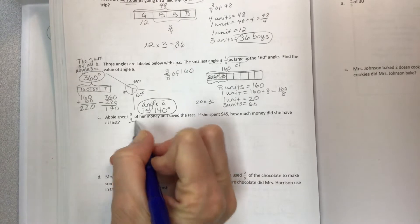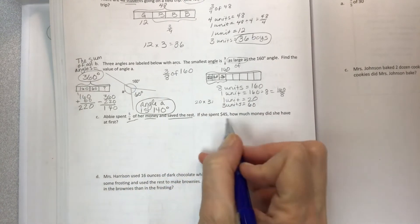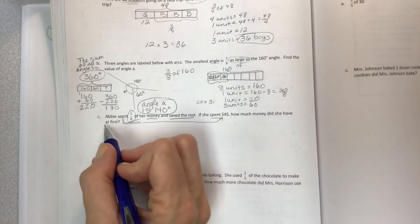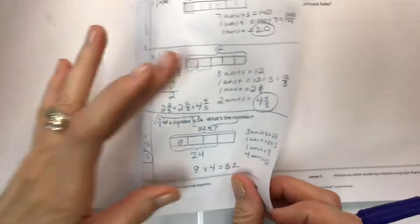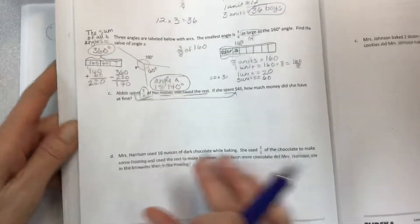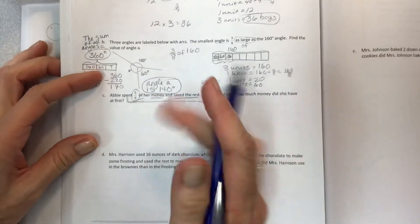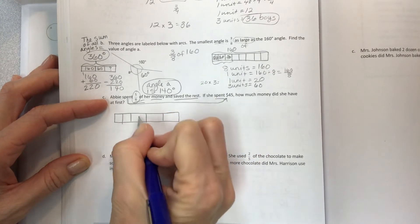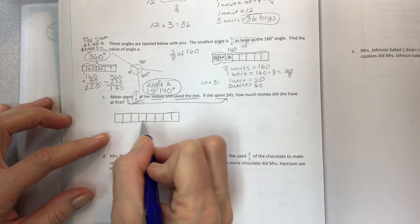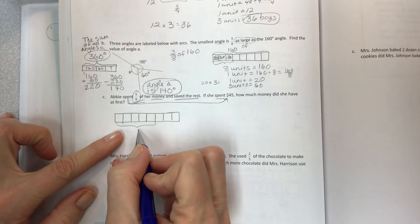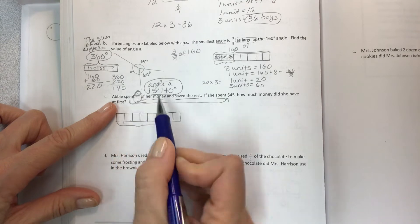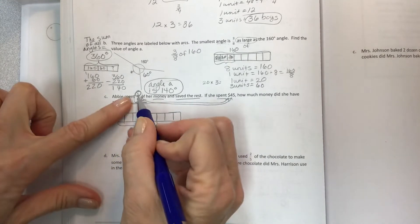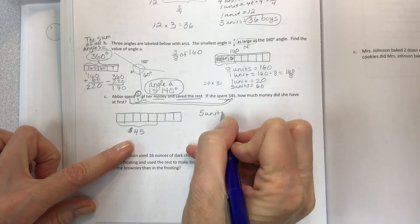Let's do C. Abby spent five-eighths of her money and saved the rest. If she spent 45 dollars, how much money did she have at first? This is sounding a lot like these other ones where I know part but I don't know the whole, and if you thought that, you'd be right. If Abby spent five out of eight parts, then I can make eight parts and identify five, one, two, three, four, five, five-eighths. She spent this five and it equals 45. Five pieces make 45. Five units make 45.